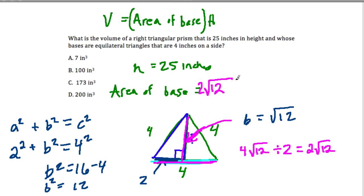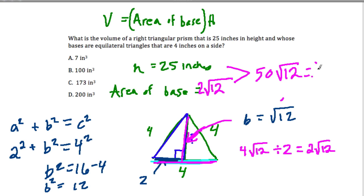So basically it's that area times the height of the prism, which gives 50 times the square root of 12. We can evaluate that on our calculator: 50 times the square root of 12 is 173.205, and rounding to the nearest whole number, that's 173 cubic inches — since we're finding volume. And the answer is C.